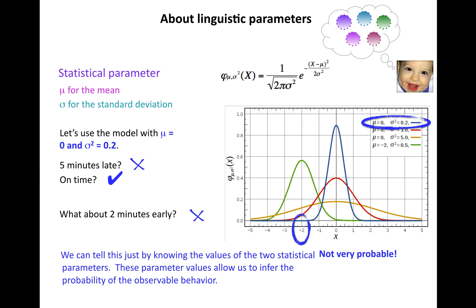We have all these predictions just by knowing the values of these two statistical parameters, μ and σ. These parameter values allow us to infer the probability of observable behavior whether I've seen it or not.